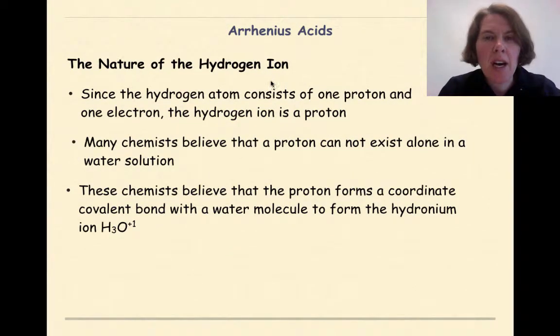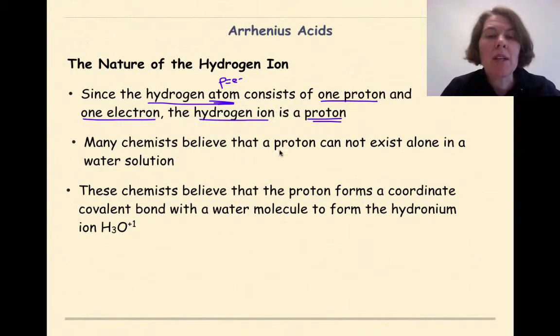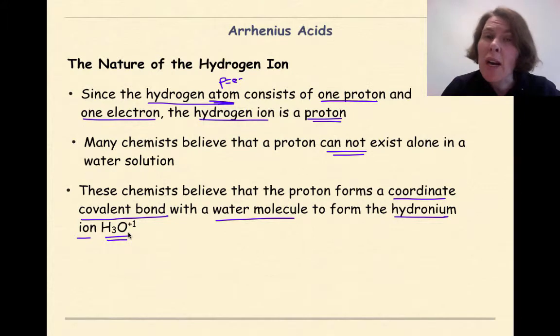Let's talk about the nature of the hydrogen ion. Since the hydrogen atom consists of one proton and one electron, the hydrogen ion, if it loses its one electron, is just a proton. Many chemists believe that a proton cannot exist alone in a water solution. These chemists believe that the proton forms a coordinate covalent bond with a water molecule to form the hydronium ion, H3O+1.